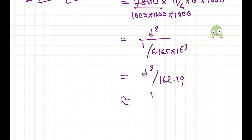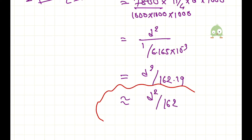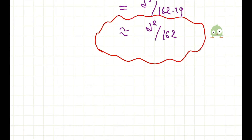Approximately, we use d squared divided by 162. That is why the formula d²/162 is used to find the weight of reinforcement per meter length.